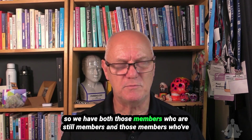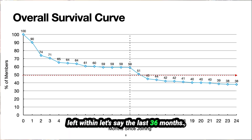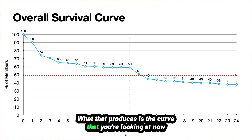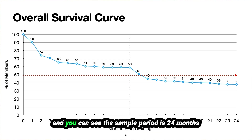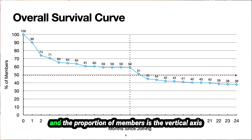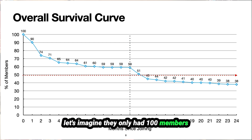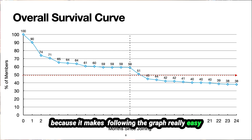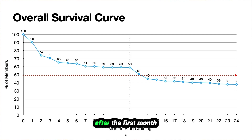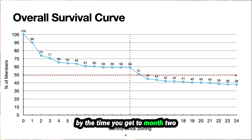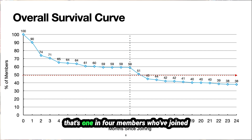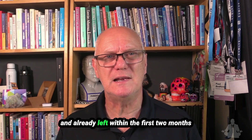We have both those members who are still members and those who've left within the last 36 months. What that produces is the curve that you're looking at now — this is real data from an operator we're currently working with. The sample period is 24 months and the proportion of members is on the vertical axis. If we imagine they only had 100 members: after the first month, 90% of those are still active. By month two, 74% of the members remain — that's one in four members who've joined and already left within the first two months.